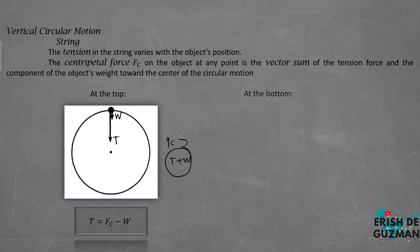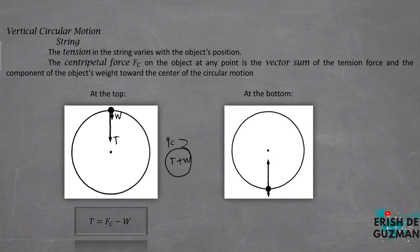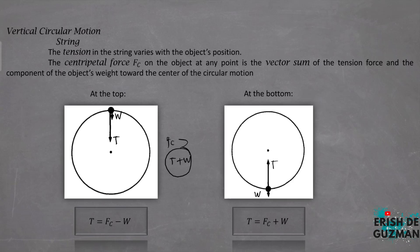When the object is at the bottom of the vertical circular motion, tension acts upward and weight acts downward. The equation for tension at the bottom is: tension equals centripetal force plus weight. Note that this vertical circular motion principle can also be applied to other systems, such as vehicles and airplanes passing through circular arcs.